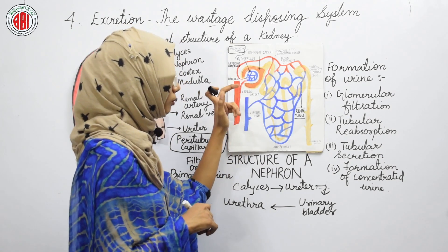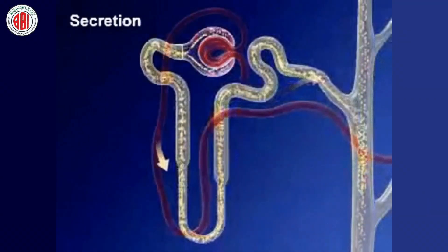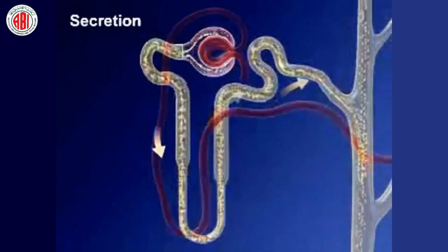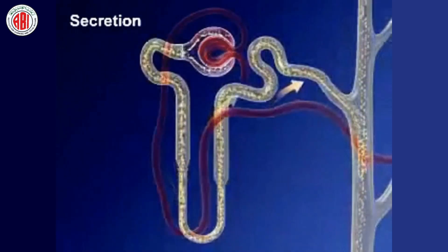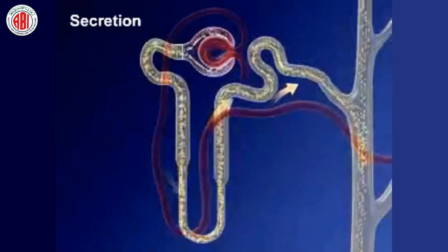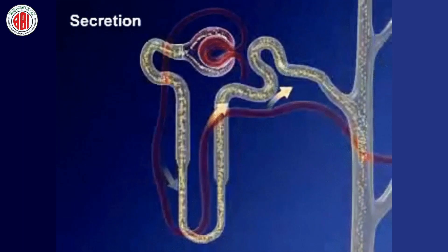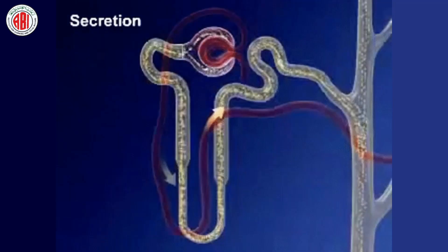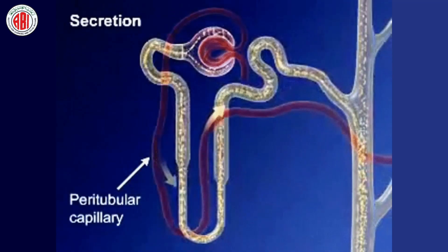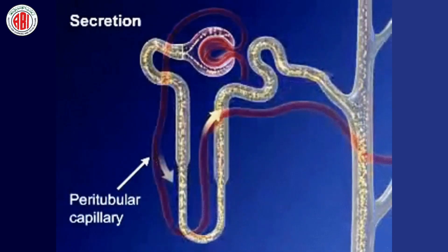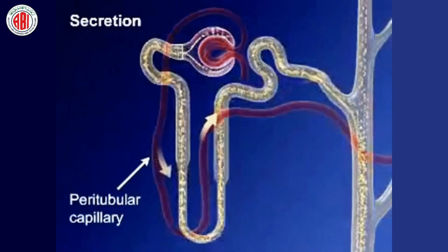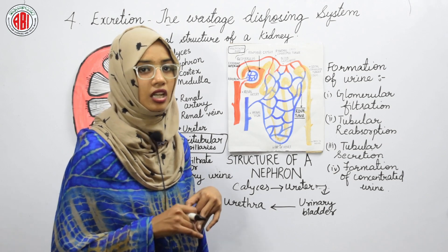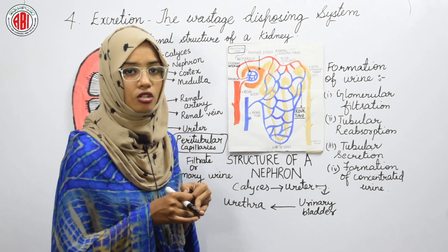This is about the formation of urine, which involves three steps: glomerular filtration carried out by the glomerulus, tubular reabsorption carried out by the peritubular capillaries, and tubular secretion which takes place in the distal convoluted tubule. The fourth step is the formation of concentrated urine. When urine has to be passed out, a hormone called vasopressin is released, which is responsible for the concentration of urine.